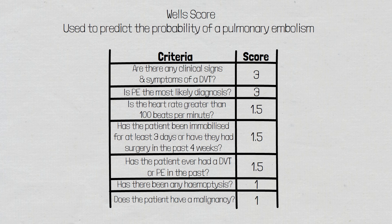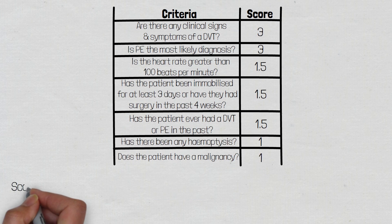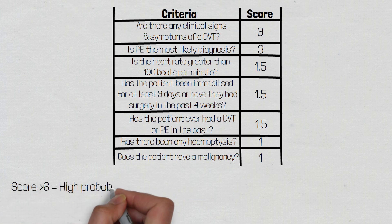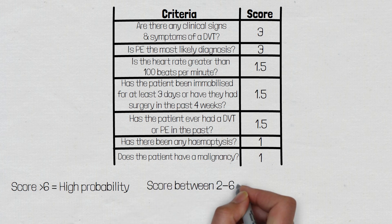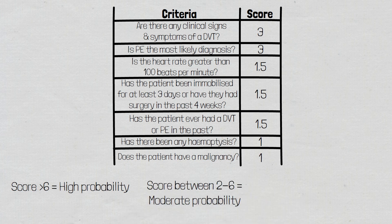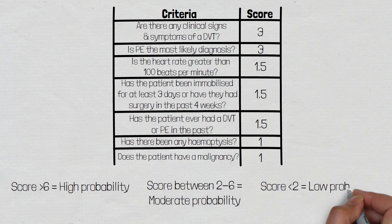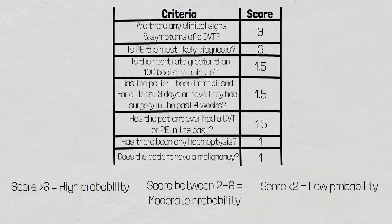Adding up these scores we can now assess the probability of a pulmonary embolism. A score greater than 6 indicates a high probability. A score between 2 and 6 indicates a moderate probability, and a score below 2 indicates a low probability. We can now use this score to help decide on what further investigations are required.